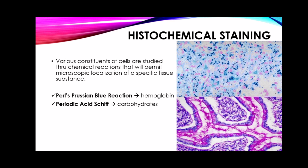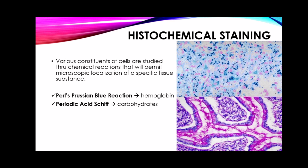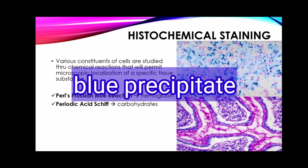The Perls Prussian blue reaction stains the storage form of iron from the bone marrow aspirate, used to check for certain diseases like hemochromatosis. The ferric form of iron is stained using this reaction. The ingredients of this staining reagent are potassium ferrocyanide and hydrochloric acid, giving a blue precipitate on the slide.